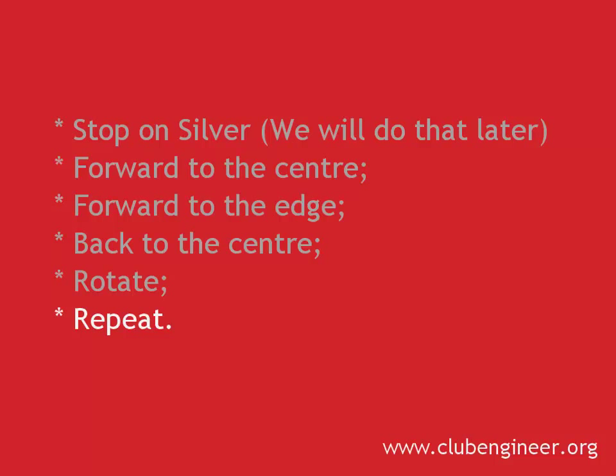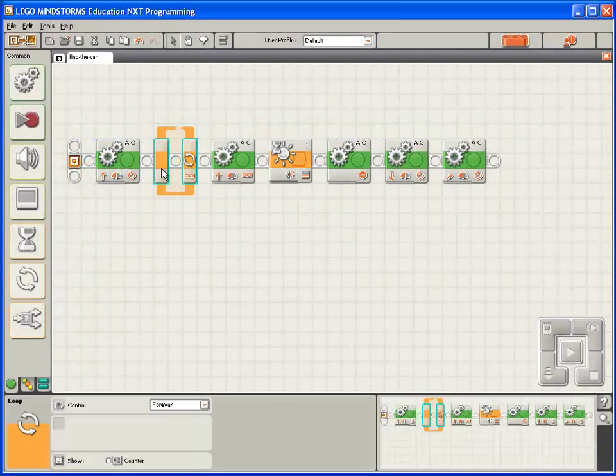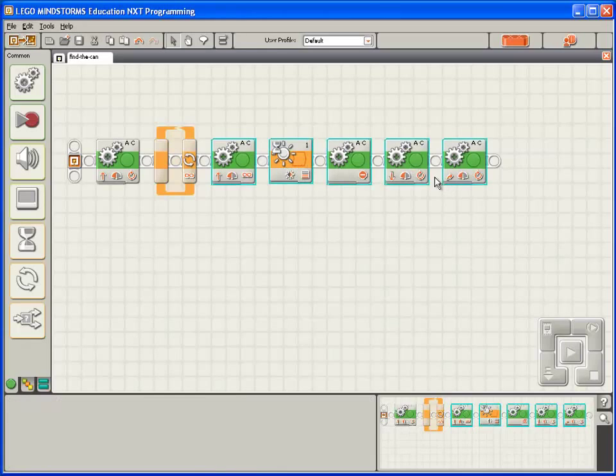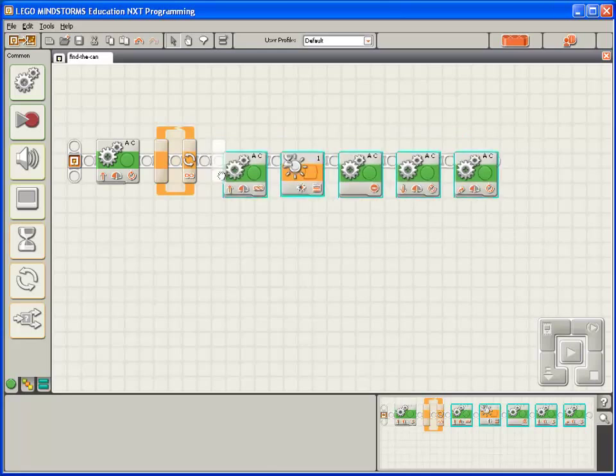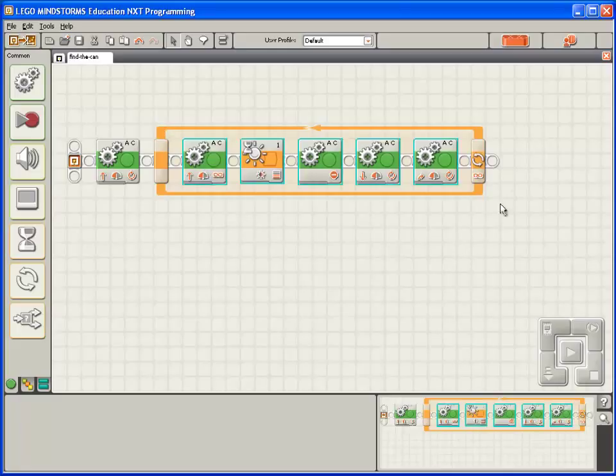The final piece of this program is to repeat the process. So we'll do that by adding a loop block. And we'll add it in between the block that takes the robot from the silver to the centre of the spill zone. We'll then move these five blocks by clicking with the shift key held down. That selects them all. See the blue border around them. Pick them up and we'll drag them into the centre of the loop block. So this will repeat the process of going forward until the edge of the spill zone is detected, stopping, going back and turning slightly.